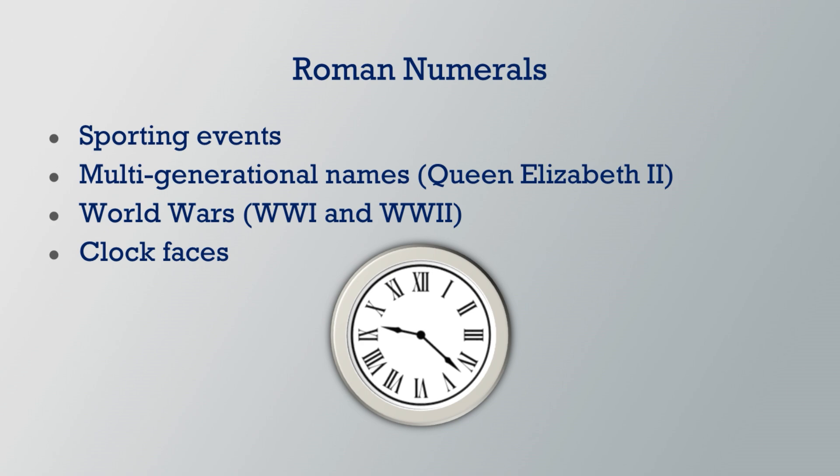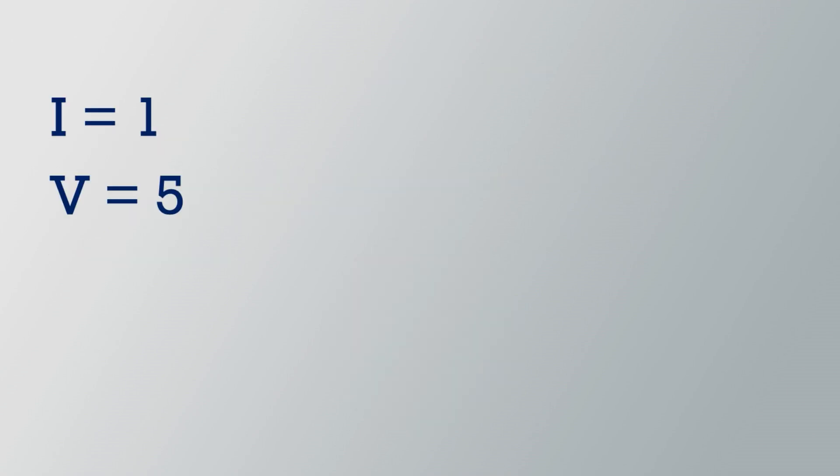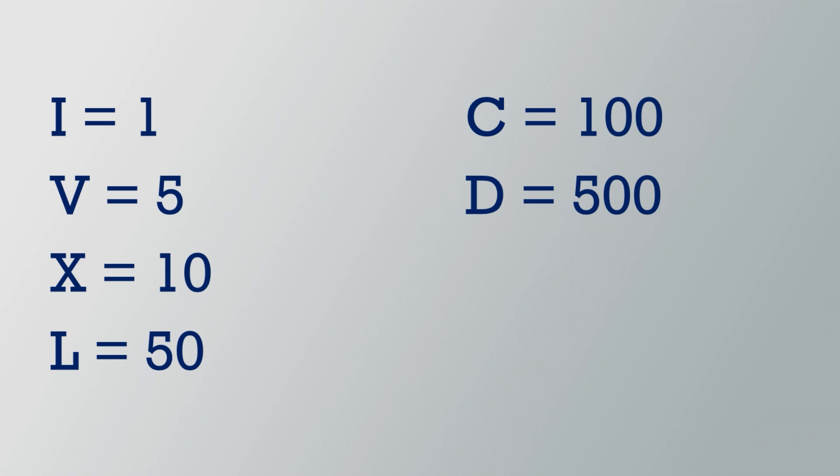There are seven main symbols we need to know when identifying numbers written with Roman numerals. The seven main symbols and their equivalents are I equals 1, V equals 5, X equals 10, L equals 50, C equals 100, D equals 500, and M equals 1000.